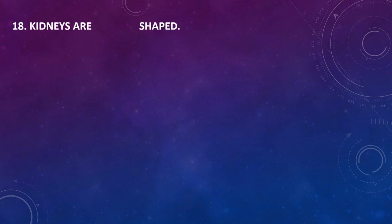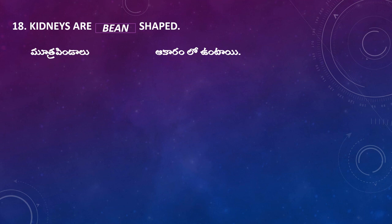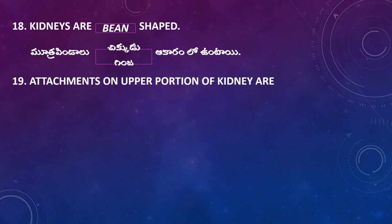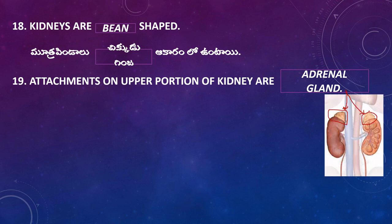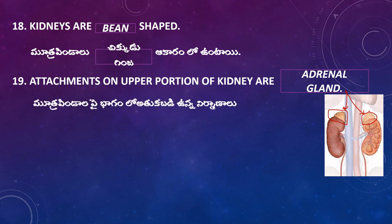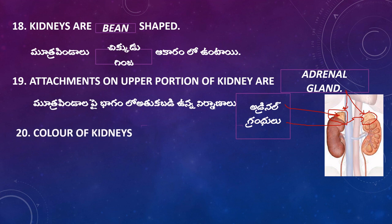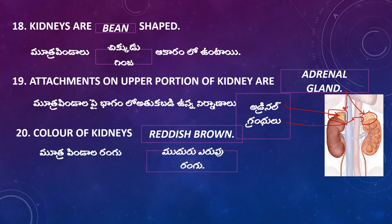Kidneys are Brussels bean-shaped. Attachments on the upper portion of the kidneys are adrenal glands. Here you can see adrenal glands on the upper portion of the kidneys. The color of kidneys is reddish brown.